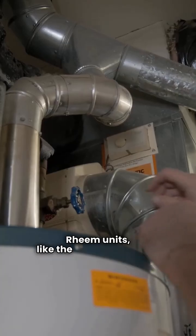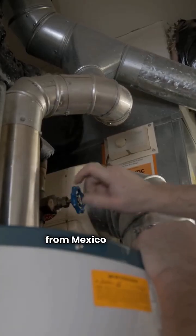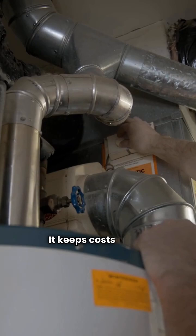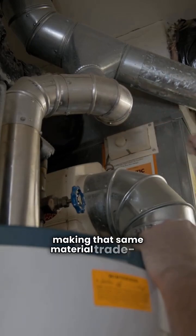Rheem units like the R95P often come from Mexico and also use aluminized steel. It keeps costs down, but you're still making that same material trade-off.